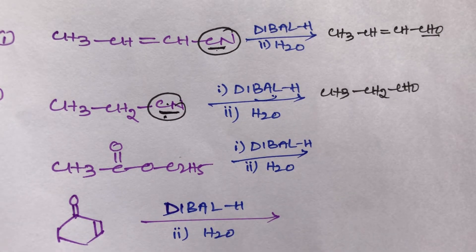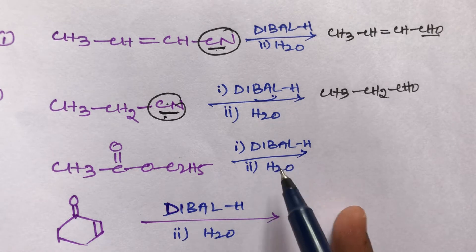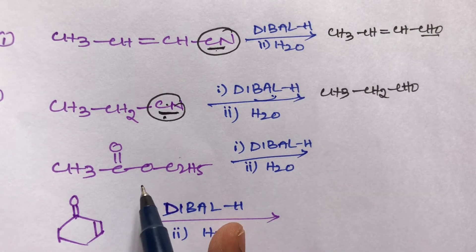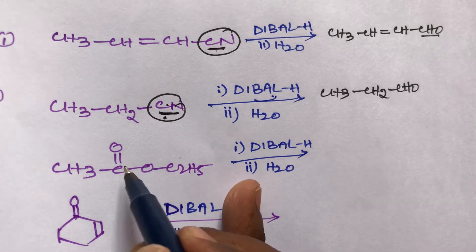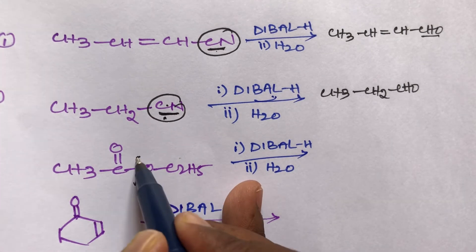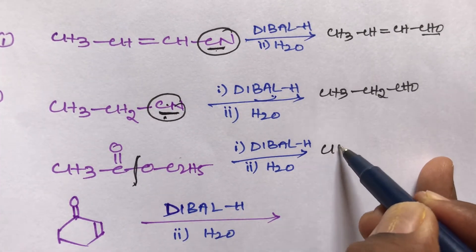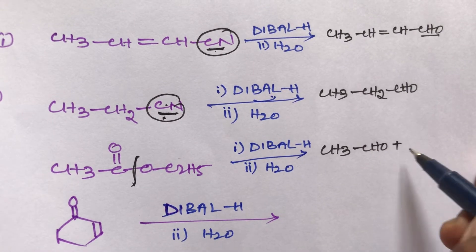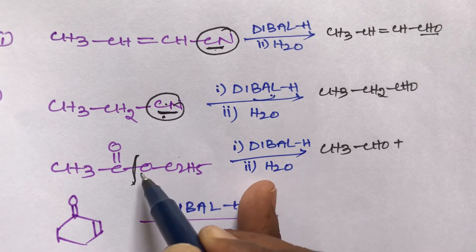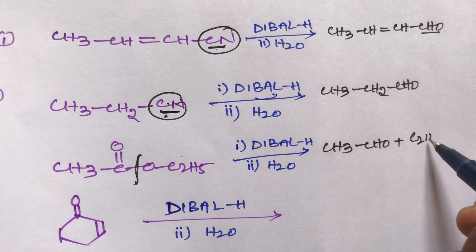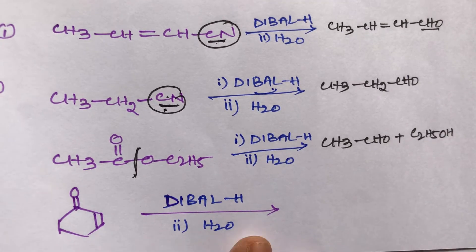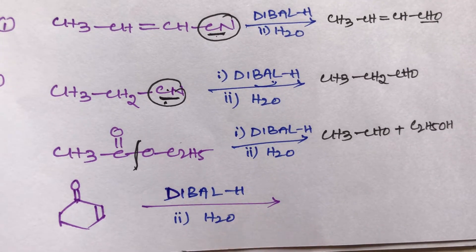Third example: an ester group reacts with DIBAL in the presence of water. The ester group gives two types of products with bond cleavage: one is an aldehyde (CH3-CHO) plus one is an alcohol (C2H5OH).